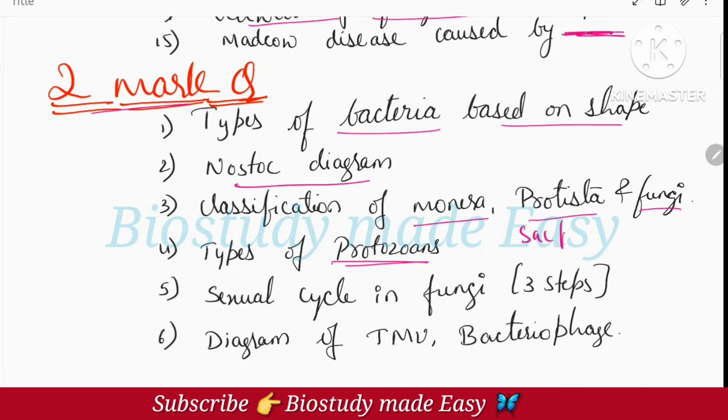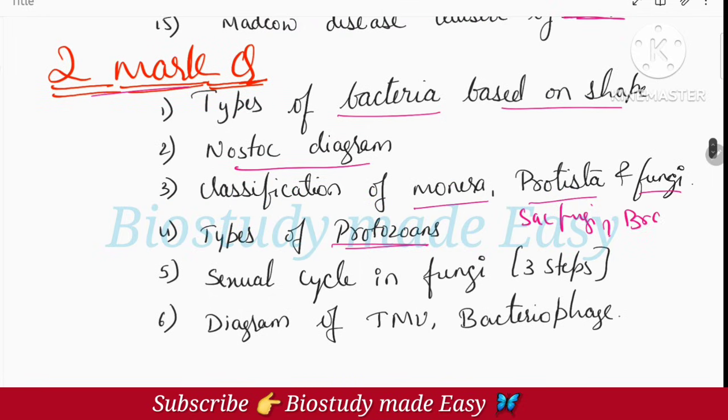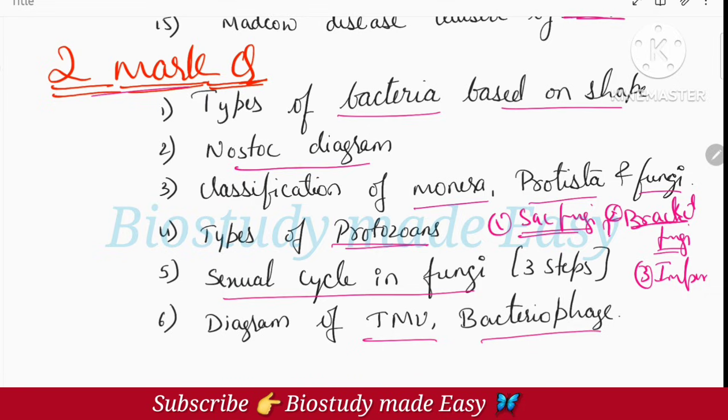Next, sexual cycle in fungi - how many steps are there in sexual cycle in fungi: plasmogamy, karyogamy, and meiosis of zygote to produce the haploid spores. Watch the fungi video for more details. Next, diagram of TMV - tobacco mosaic virus diagram and bacteriophage diagram. Watch the videos - many diagrams will be asked from the second chapter onwards. TMV diagram for 2 marks and bacteriophage diagram will be asked.